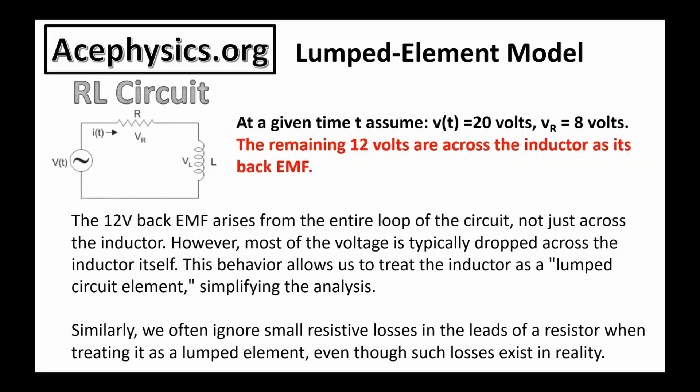The lumped element model. On this slide, I have an RL circuit. This is a power source, a resistor, and an inductor. At a given time T, the voltage across the power source is 20 volts. There's 8 volts across the resistor. The remaining 12 volts are across the inductor as the back EMF. The 12-volt back EMF arises from the entire loop of the circuit, not just across the inductor. However, most of the voltage is dropped across the inductor itself.